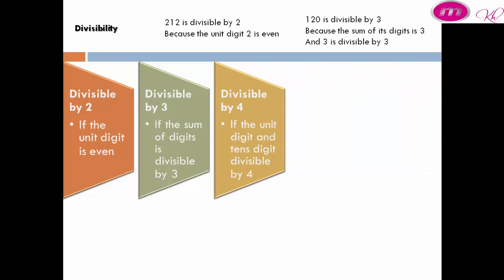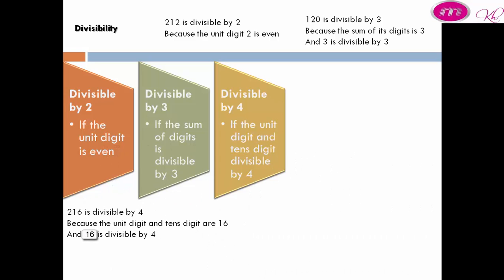Divisible by 4: a number is divisible by 4 if the unit digit and tens digit together form a number divisible by 4. For example, 216 is divisible by 4 because the last two digits are 16, and 16 is divisible by 4.